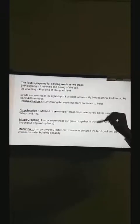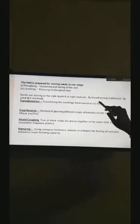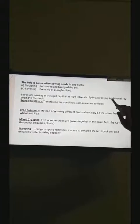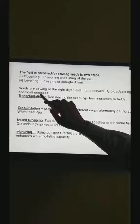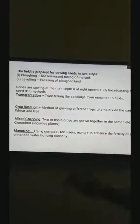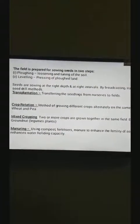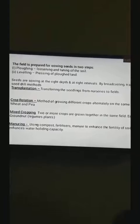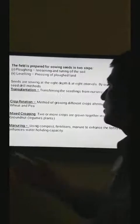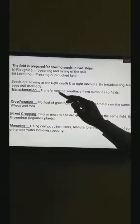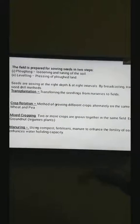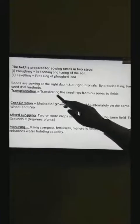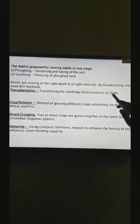Methods of sowing the seeds are broadcasting, traditional method, seed drill method and transplantation. In transplantation method, farmers first grow the small baby plants in the nurseries then transfer them to the field.